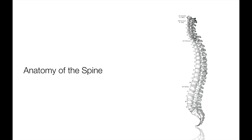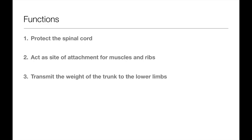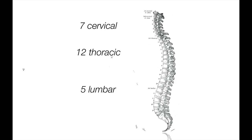Let's start by taking a look at the key anatomy of the spine. There are three main functions of the vertebral column. The vertebral column consists of 7 cervical vertebrae, 12 thoracic vertebrae, 5 lumbar vertebrae, and 4 coccygeal vertebrae.